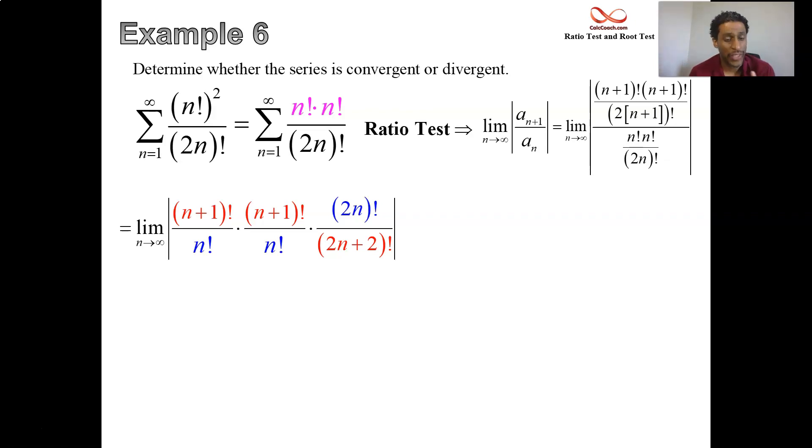The next action we take is breaking apart these factorials. We take off one term and the rest is then going to have a factorial on it. n plus 1 factorial, the quantity of n plus 1 with a factorial on it, is written as n plus 1 times n factorial.